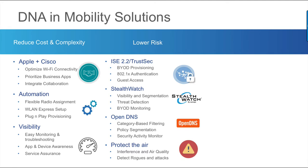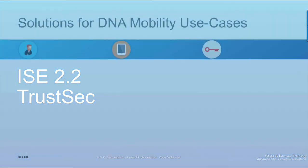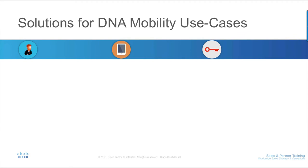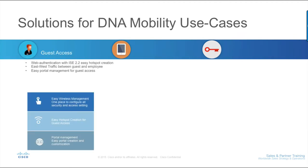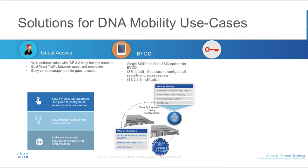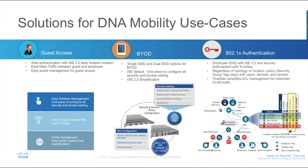Cisco's Identity Services Engine or ISE version 2.2 introduces a simplified workflow across ISE and the wireless LAN controller. It provides easy wireless management and one place to configure all security and access settings, easy hotspot creation, and easy portal management and customization. The BYOD workflow provides both single and dual SSID options. Secure authentication using 802.1x and TrustSec provides security enforcement regardless of topology or location. TrustSec security group tags stay with the users, devices, and servers, and SG ACLs simplify access control for inter- and intra-VLAN traffic flows.